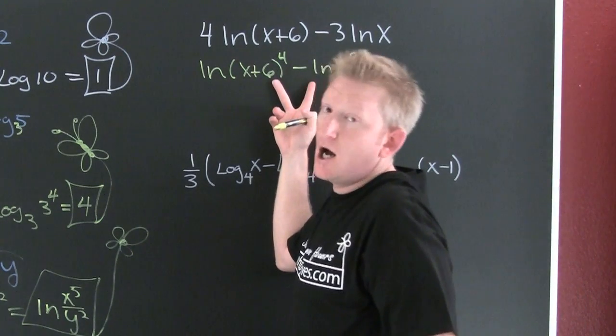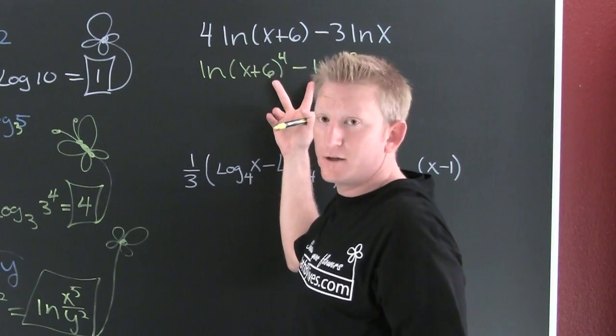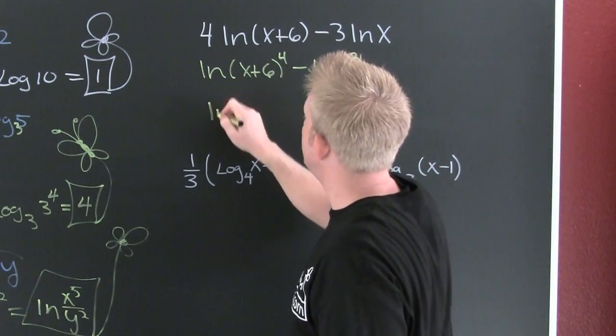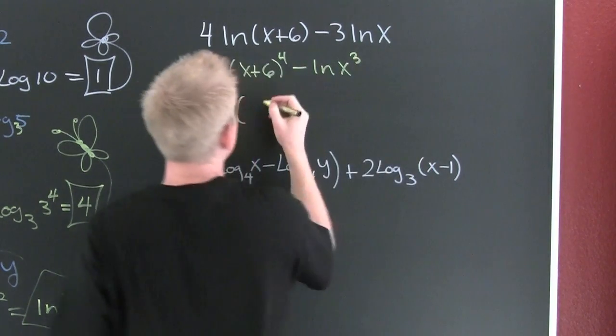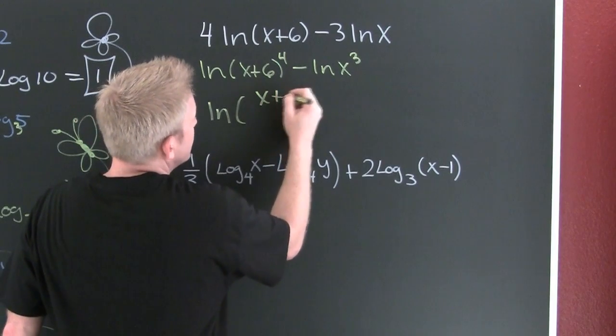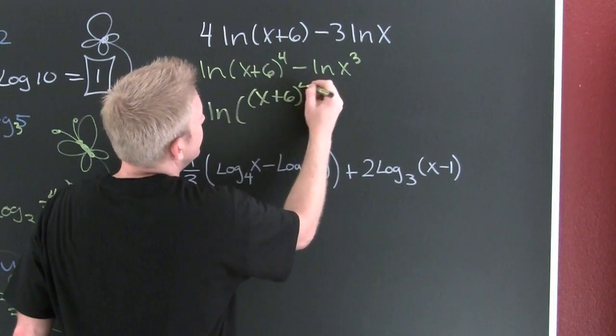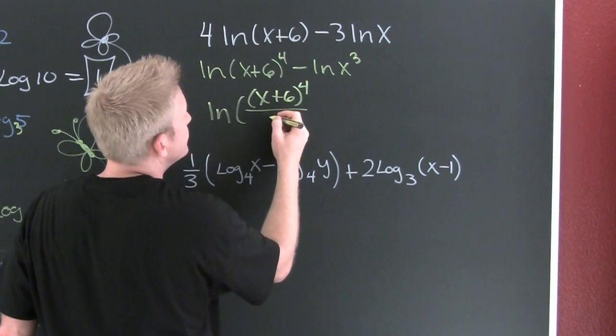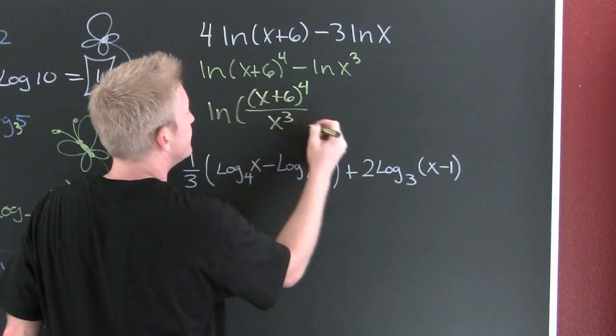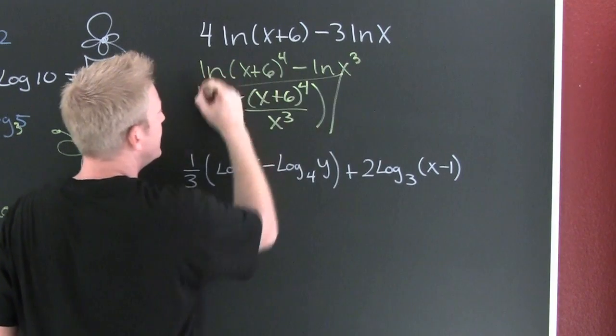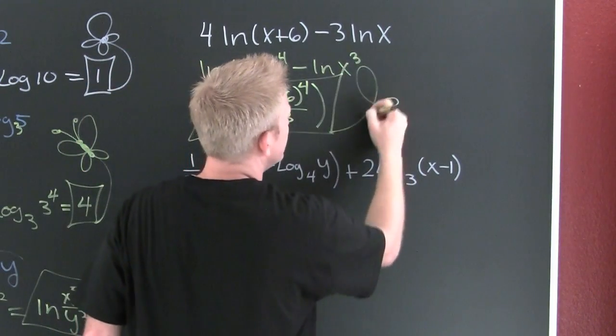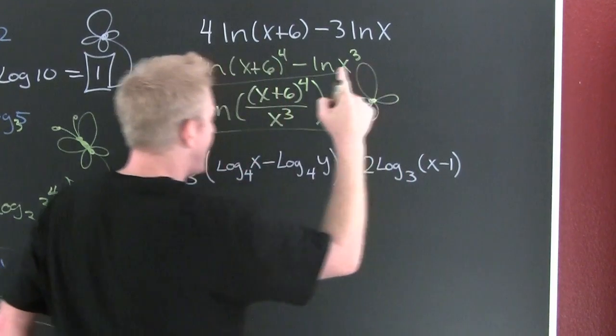I have the difference of logs. I'm going to use the log of the quotient. So then this is the natural log of x plus six to the fourth divided by x to the third. And you're done. And you're done. With that flower.